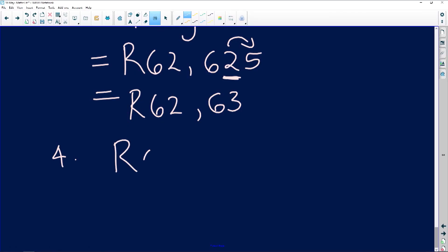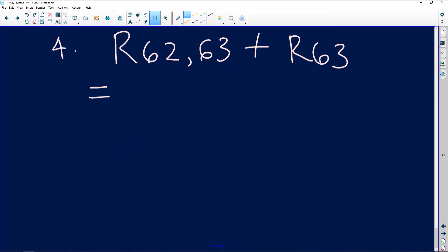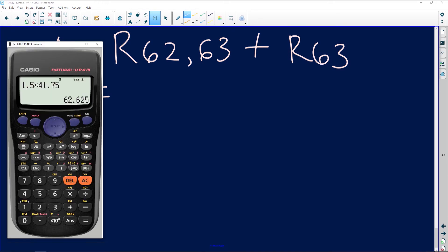So now we've calculated the rice separately, we've calculated the beef separately, we need to add them together. That's going to be R62.63 plus R63, which gives us R125.63.